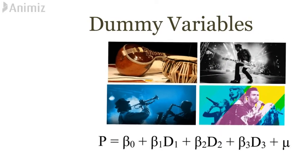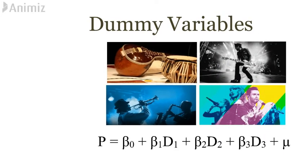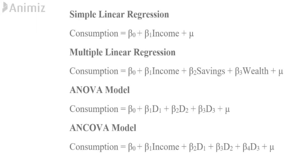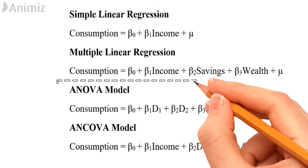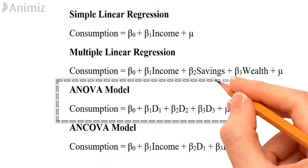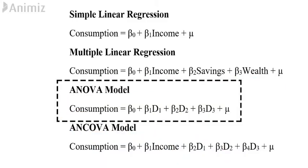In the last video, we saw how dummy variables can be used when the independent variables are categorical or qualitative variables in regression models. Sometimes a regression model may contain independent variables that are all exclusively dummy or qualitative in nature. Such models are called analysis of variance, i.e., ANOVA models.